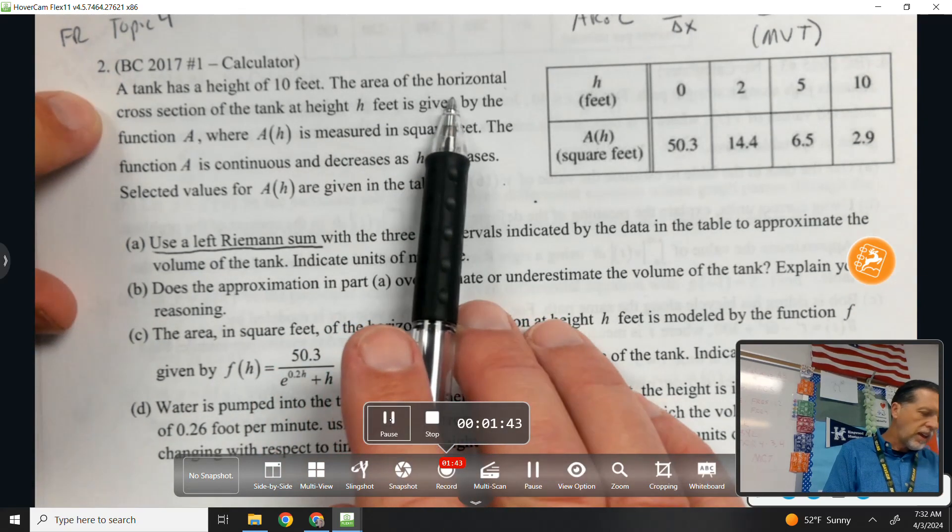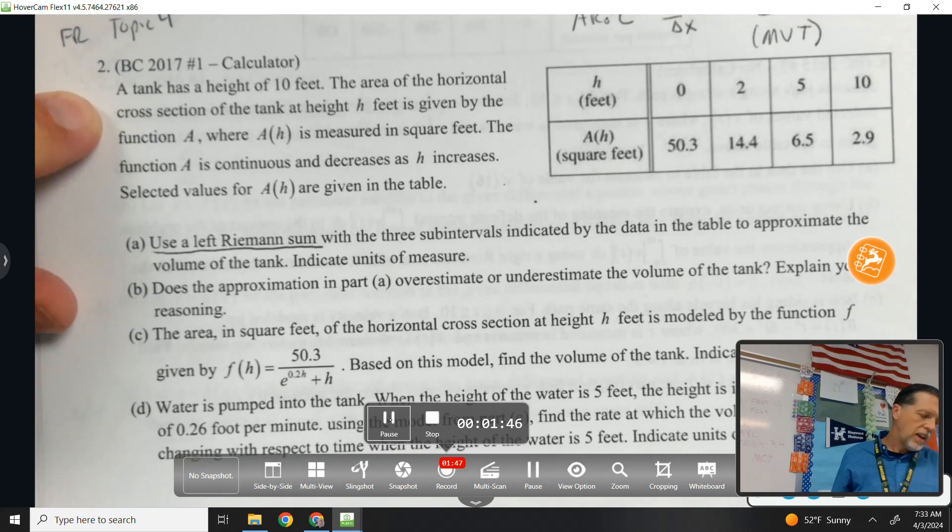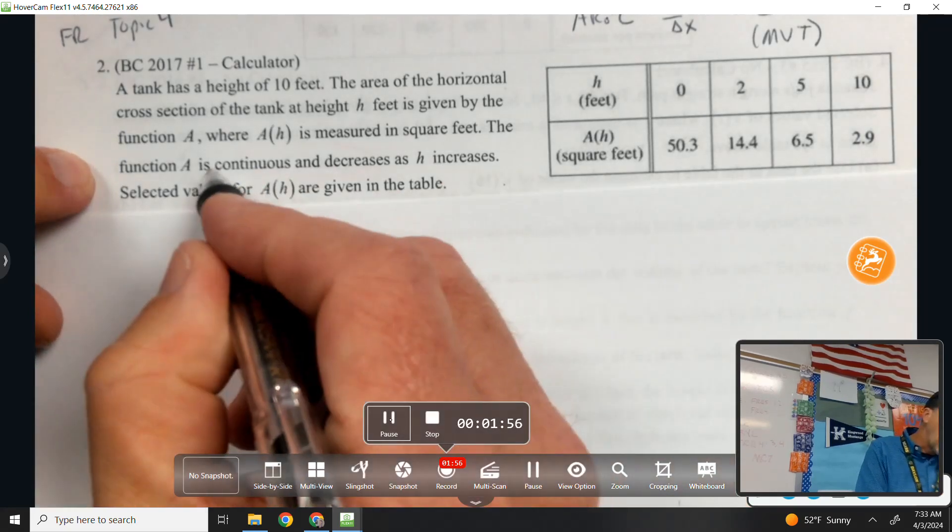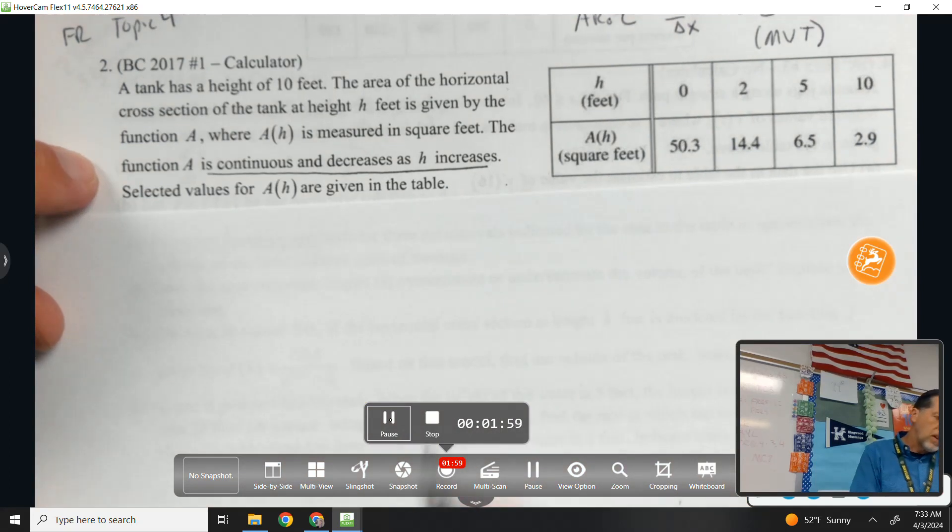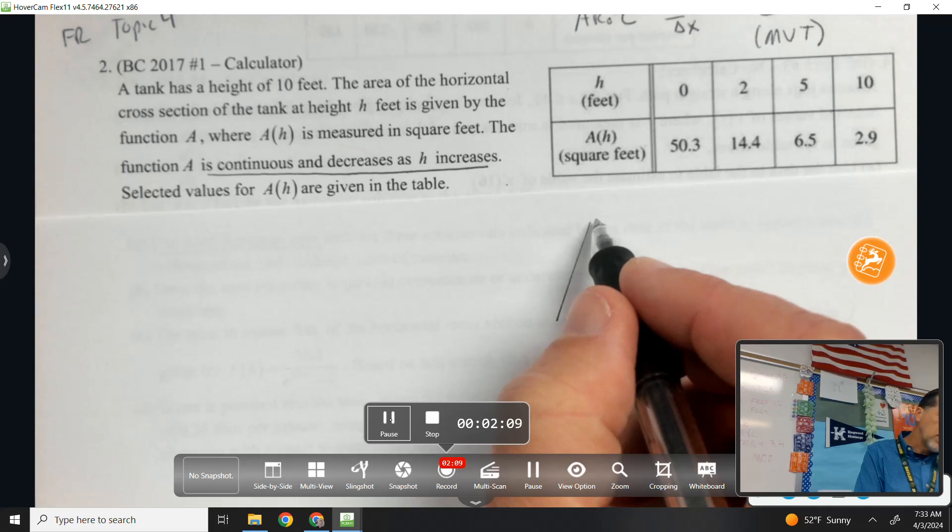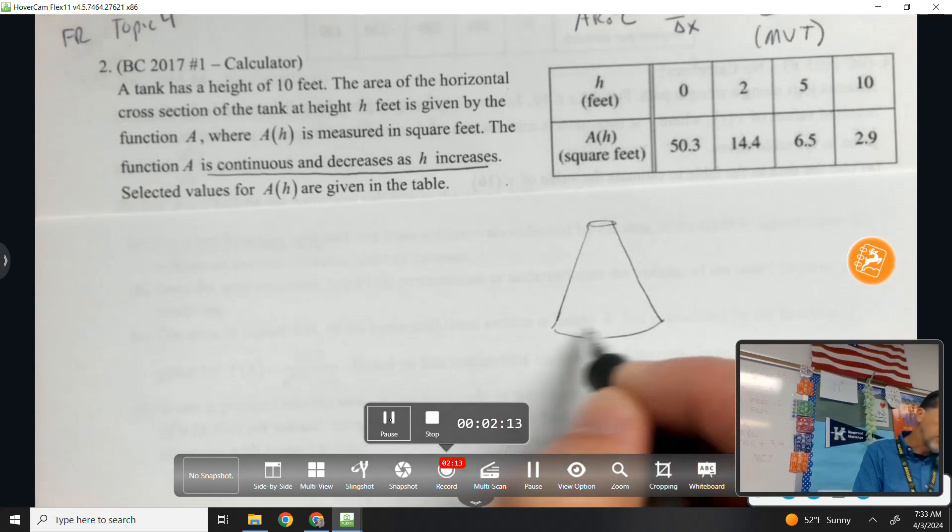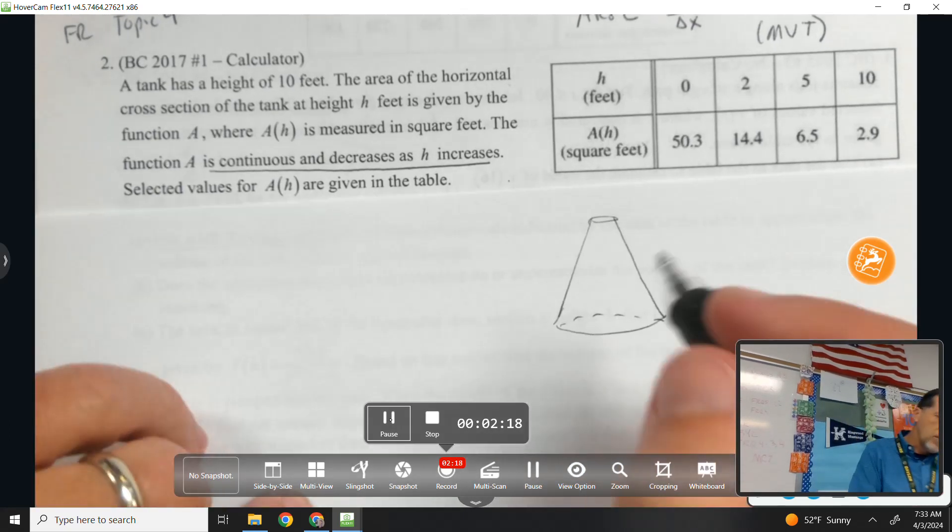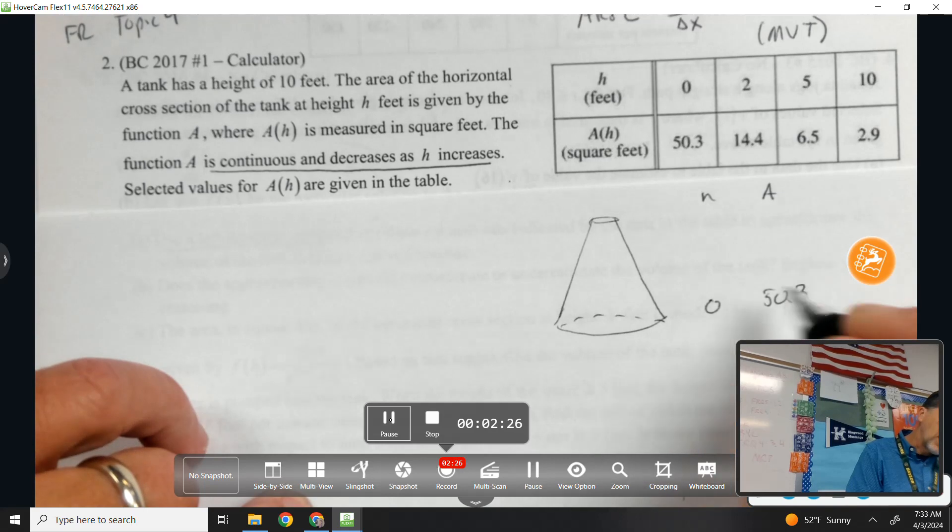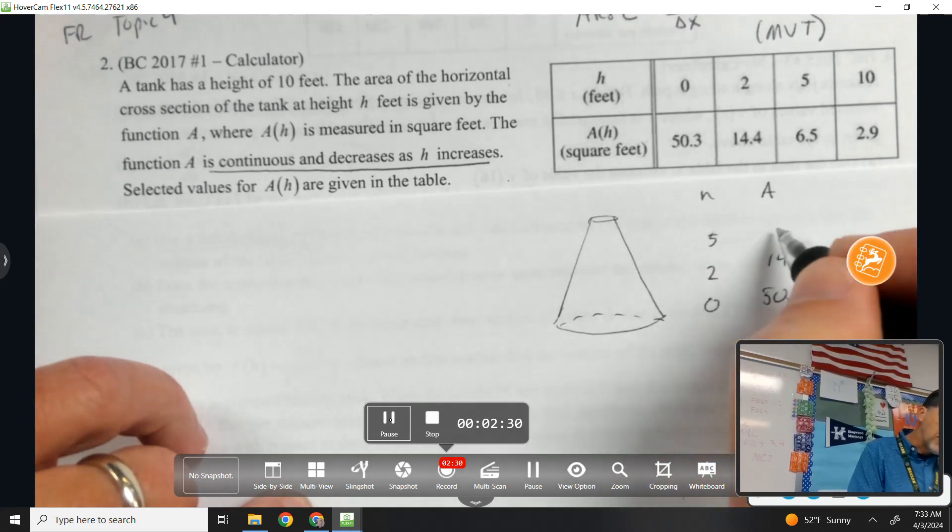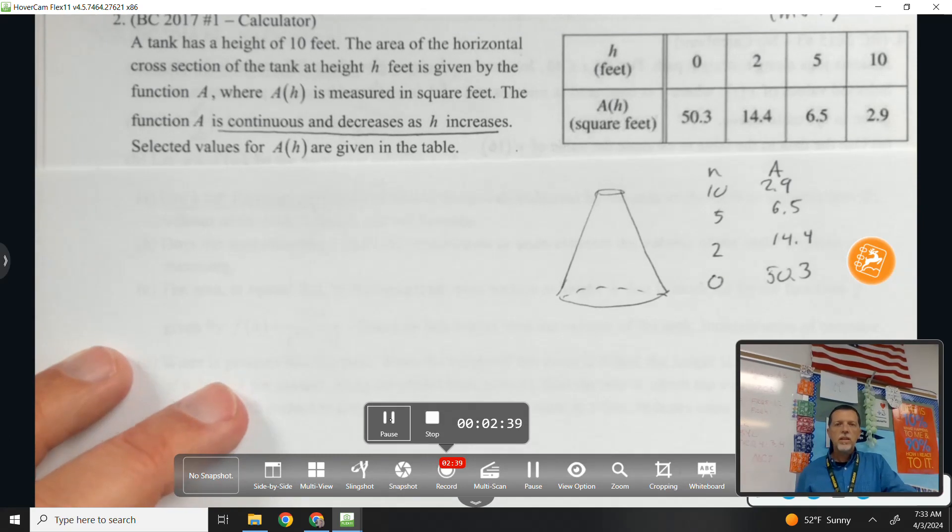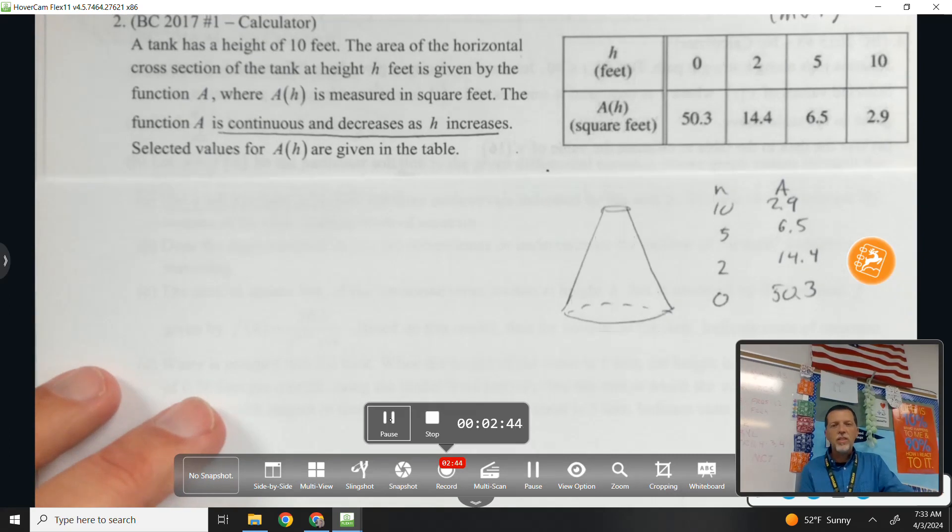All right, so let's read this problem and see if some of those things show up. A tank has a height of 10 feet. The area of the horizontal cross-section of the tank at h feet is given by the function A, where A is measured in square feet. The function A is continuous and decreases as h increases. So I don't know what this tank looks like, but at the bottom it's really big, and then at the top it's really small.